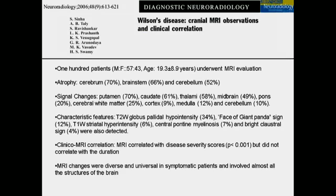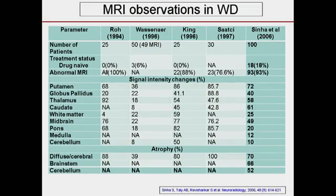This was our initial experience of 100 patients who underwent MRI over four years — a project in which Dr. Prashant was working as a project officer after joining as a neurology resident. We compared with other studies and found signal changes in putamen, globus pallidus, thalami, caudate, white matter, and midbrain.